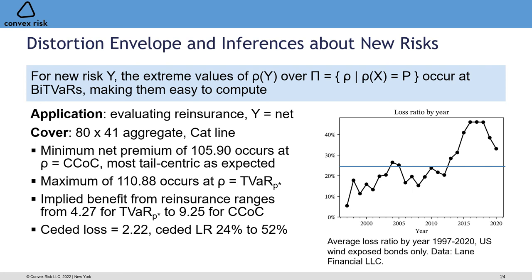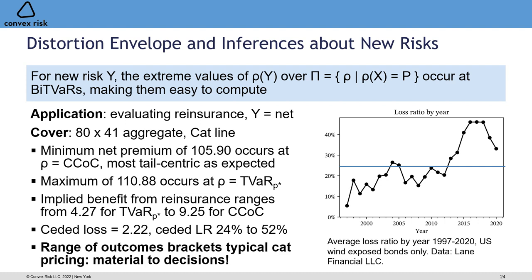The ceded loss to this contract would be 22.2, corresponding to a ceded loss ratio of somewhere between 24% and 52%. That's a very relevant range: a cat contract like this would probably be priced to a loss ratio in the 30s. So the uncertainty between buy-decision thresholds of 24% and 52% is broad but material — your broker would probably pitch a ceded loss ratio of around 35%. A chart of average loss ratios on US wind-exposed cat bonds from 1997 to 2020 shows that since HIM in 2017 pricing has risen, with recent loss ratios above the 24% level. This range of outcomes can be used to infer the risk measures executives are actually using and drive consistent risk decision-making throughout the organization.